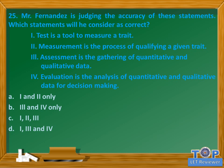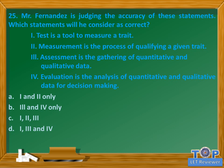Question number twenty-five: Mr. Fernandez is judging the accuracy of statements about assessment. Which statements will he consider correct? 1. Test is a tool to measure a trait. 2. Measurement is the process of quantifying a given trait. 3. Assessment is the gathering of quantitative and qualitative data. 4. Evaluation is the analysis of quantitative and qualitative data for decision making. A. 1 and 2 only, B. 3 and 4 only, C. 1, 2, 3, D. 1, 3, and 4. Answer: D. 1, 3, and 4.